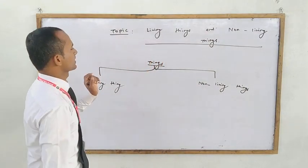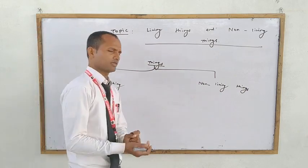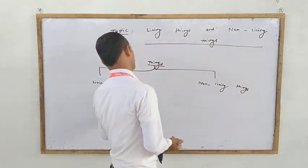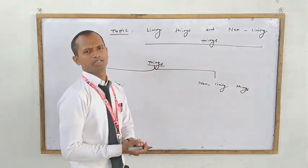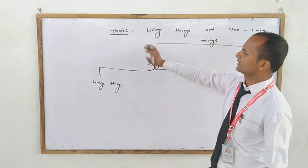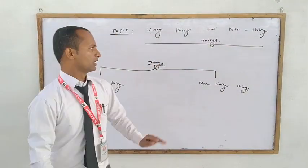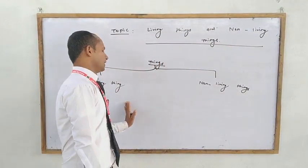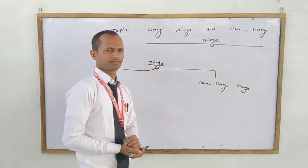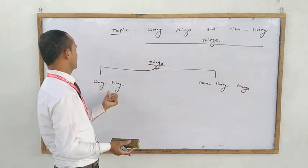Further, let's try to understand about other groups of living things. Living things are also classified into different groups. Here I am going to classify living things depending on the presence or absence of backbone. Let's try to understand further parts of living things.